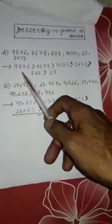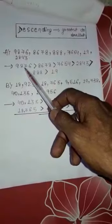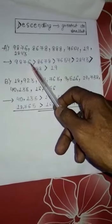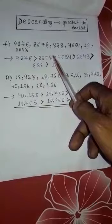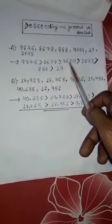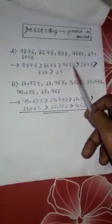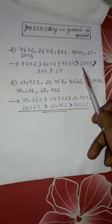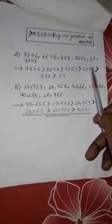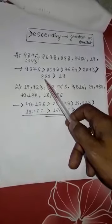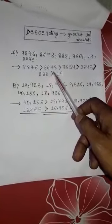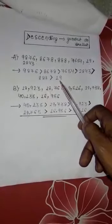Which is the biggest? 9,876 is greater than 8,678. This one is greater than 7,650. This one is greater than 2,843. And this one is greater than 888. And this one is greater than 19.